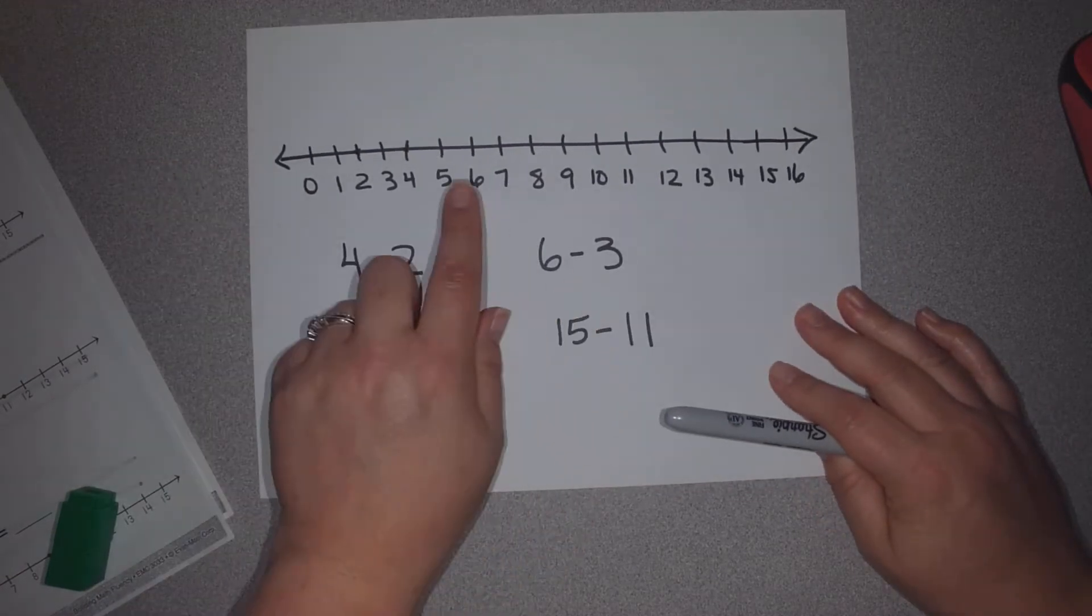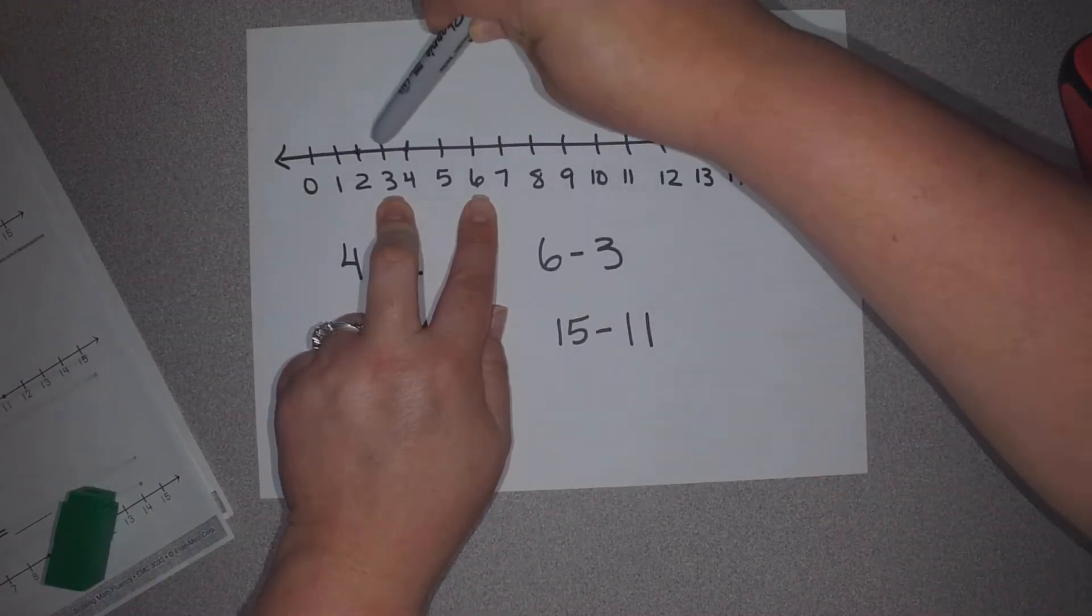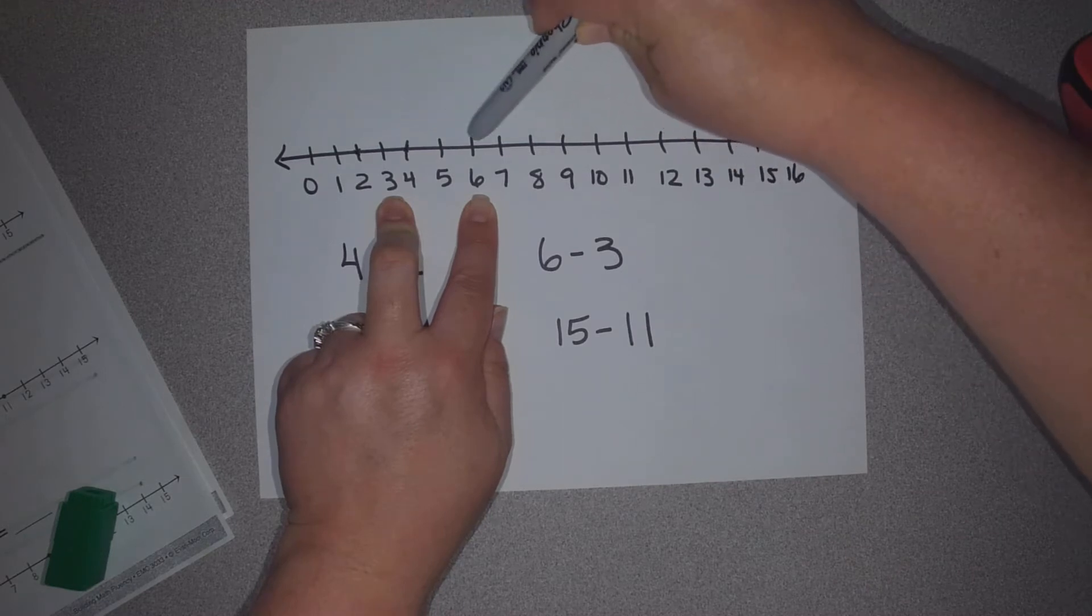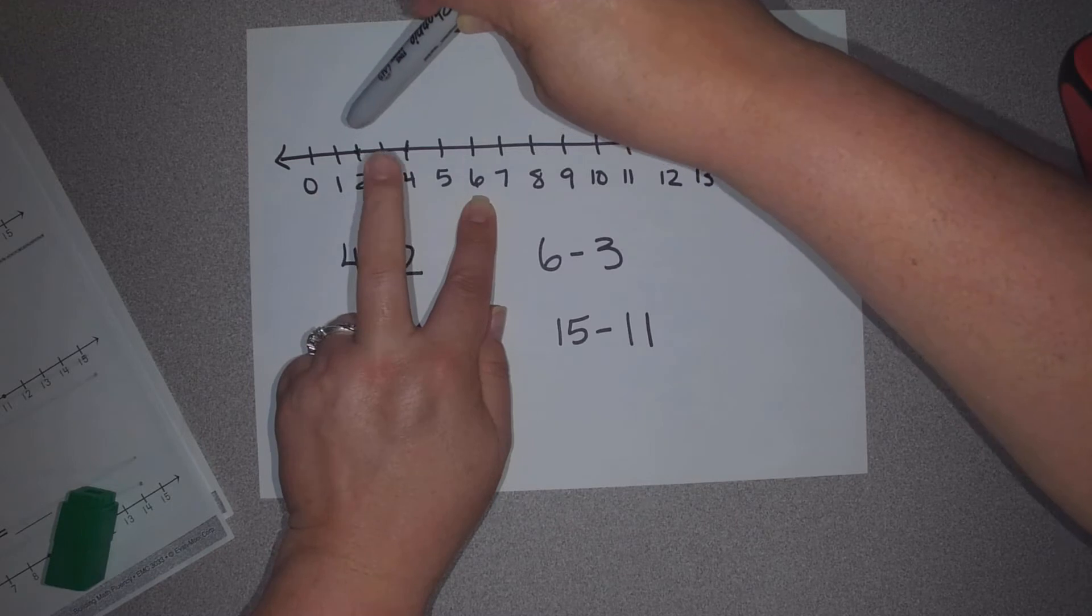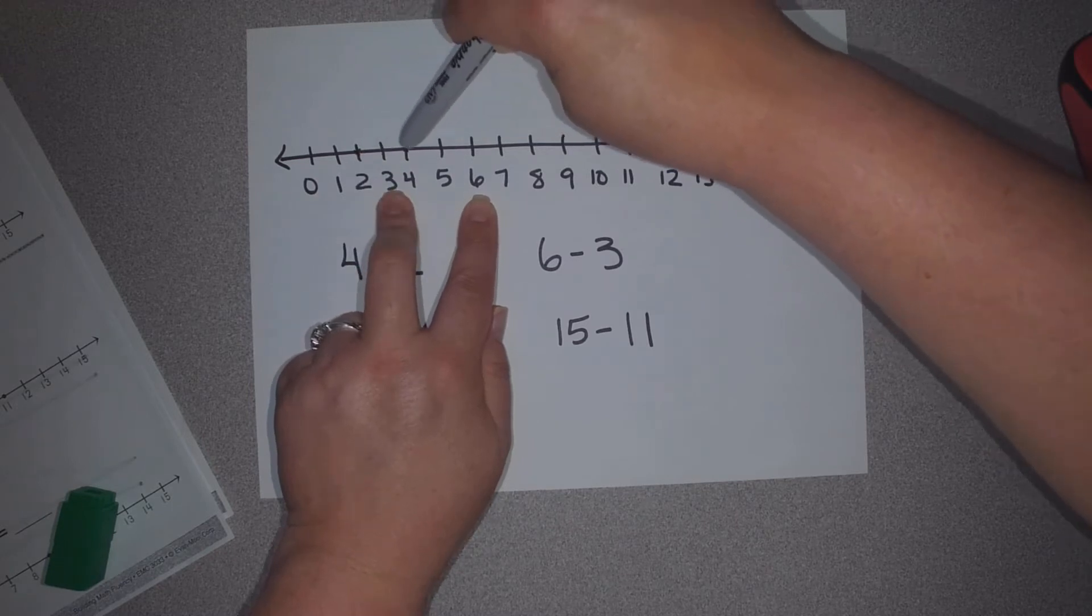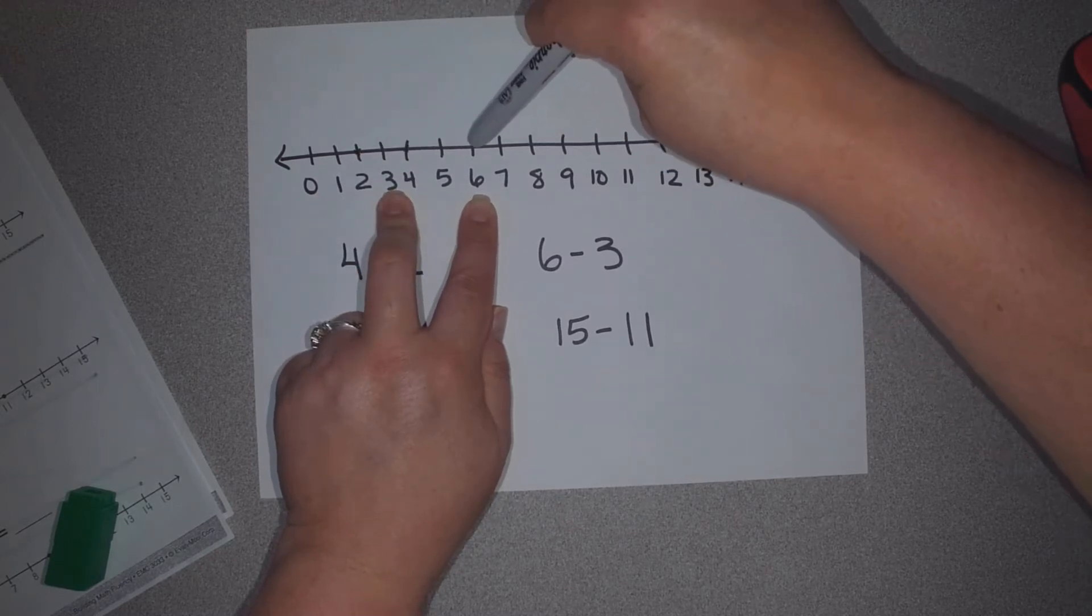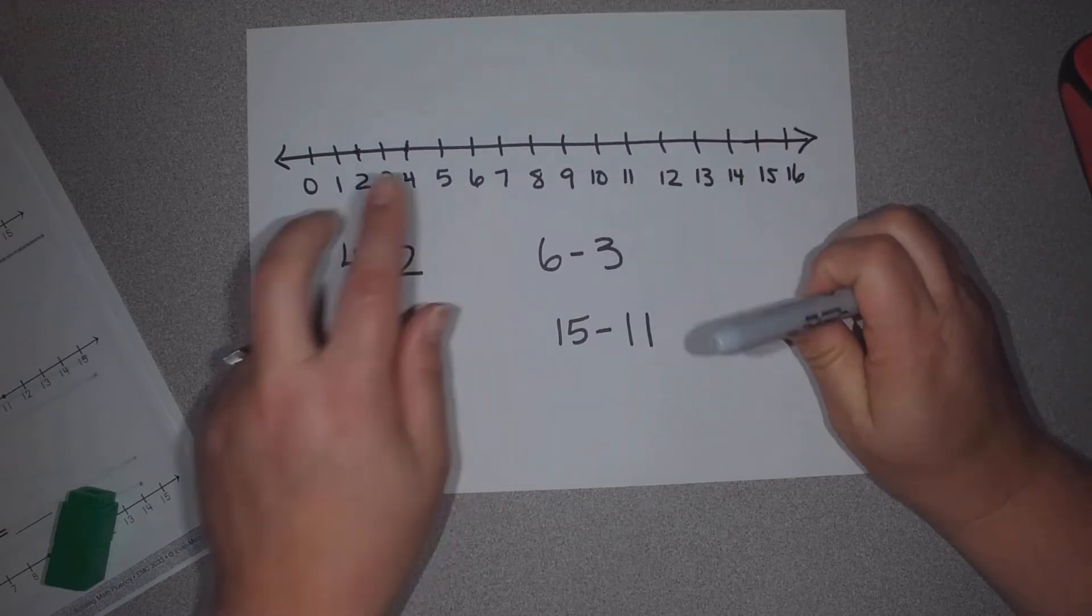If we look here at the 6 and the 3, we want to find the difference between these two numbers. So instead of counting back, I can count up. I start at the 3 and I go 4, 5, 6. The difference was 3 jumps.